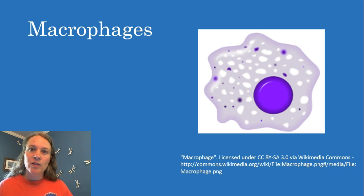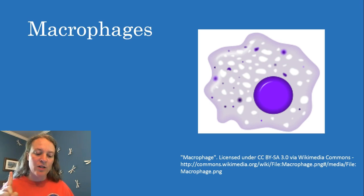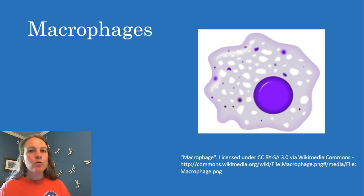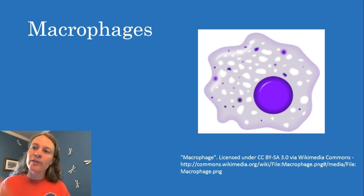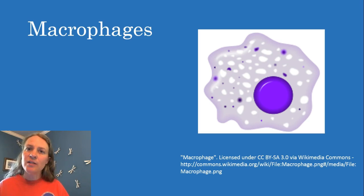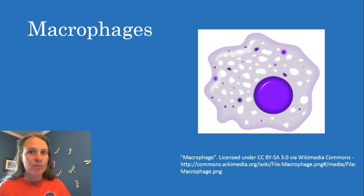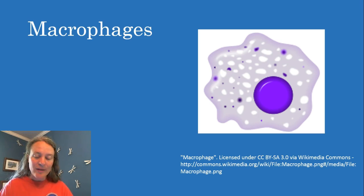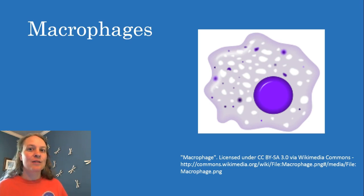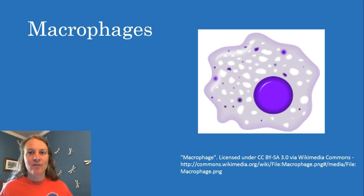Macrophages are not just doing phagocytosis — they're also releasing things like nitric oxide, reactive oxygen species, interleukins, and other inflammatory markers, which do a couple things: they can help recruit other types of immune cells, and they can recruit lymphocytes and activate helper T cells, which can then stimulate B cells and stimulate the adaptive response. Macrophages are antigen-presenting cells, so they can also be involved in adaptive immunity. There is also some evidence that certain types of macrophages, especially the resident ones, can turn off and help calm down inflammation. Macrophages can regenerate their lysosomes, unlike neutrophils, so they last a lot longer.